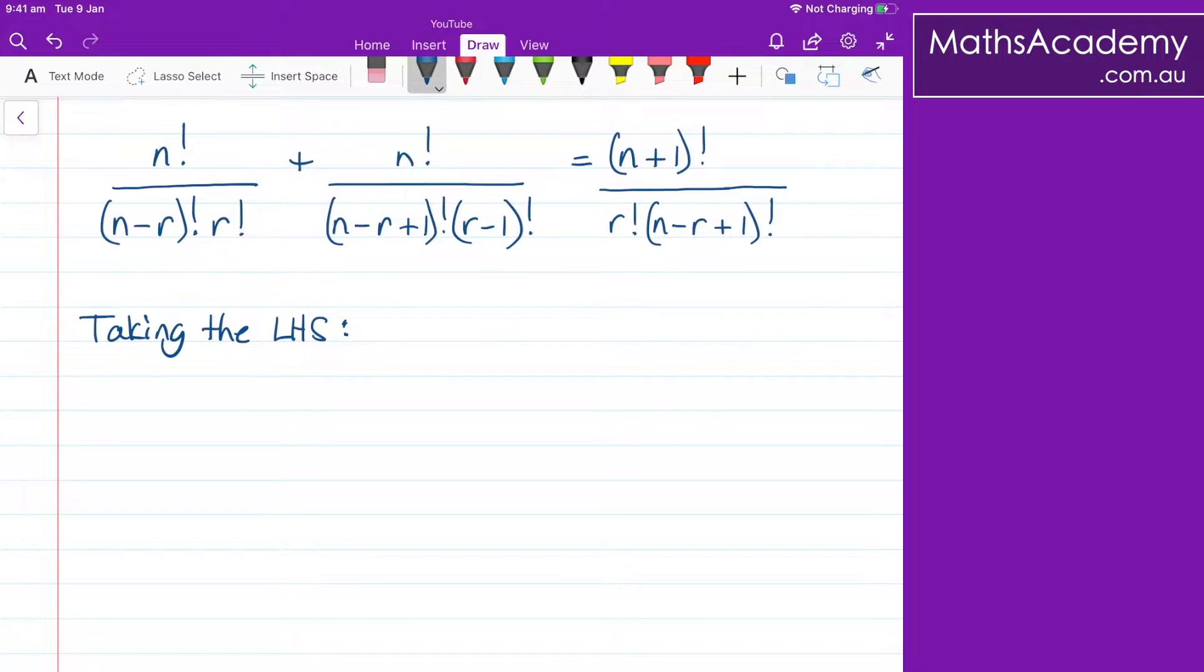Today we have another factorial question, and these are proving to be very popular this time of year. What we need to do in this question is show that the left hand side is equal to the right hand side. Now it looks fairly complex, but let me break it down step by step and hopefully you'll be able to follow along.